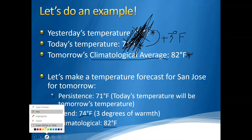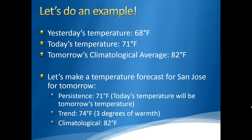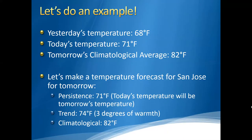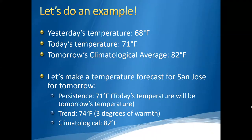These are three relatively simple forecasting methods, and be careful on the module exercise — many students think it's too easy and overcomplicate it. It literally is that simple. For persistence, use today's temperature. For trend, the difference between yesterday and today is your prediction for tomorrow. For climatological, whatever average I give you, plug it in. That's it.